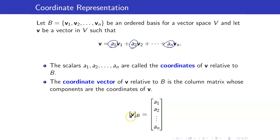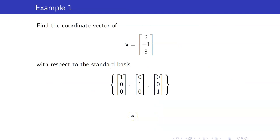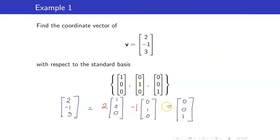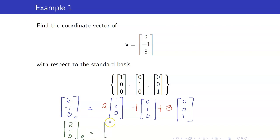For example, let us find the coordinate vector of V = (2, -1, 3) with respect to the standard basis. We write (2, -1, 3) as a linear combination of the standard basis. The constants are going to be 2, -1, 3. That is the nice thing about the standard basis — it is very easy to see what the constants are. Hence, the coordinate vector of (2, -1, 3) is just equal to itself: 2, -1, 3.